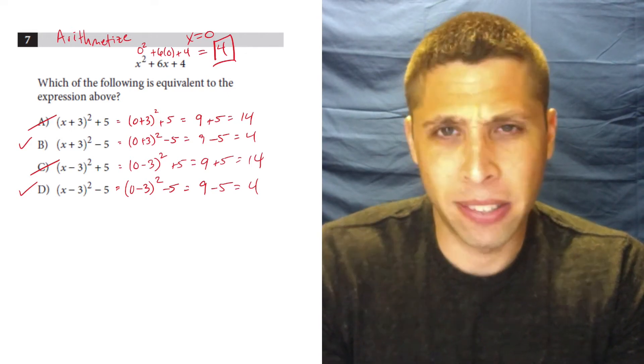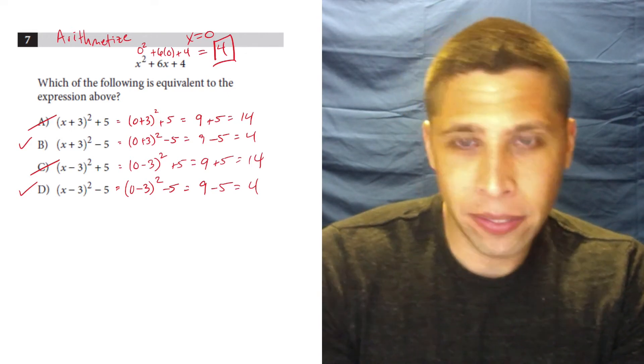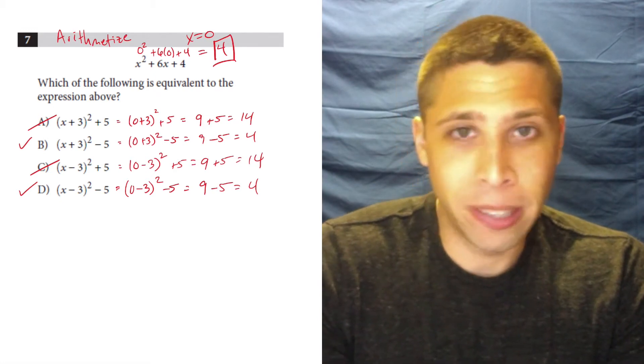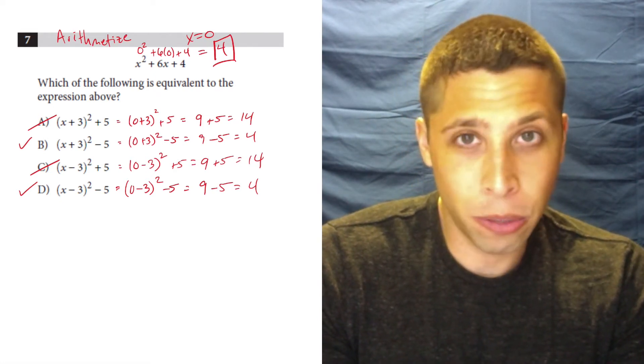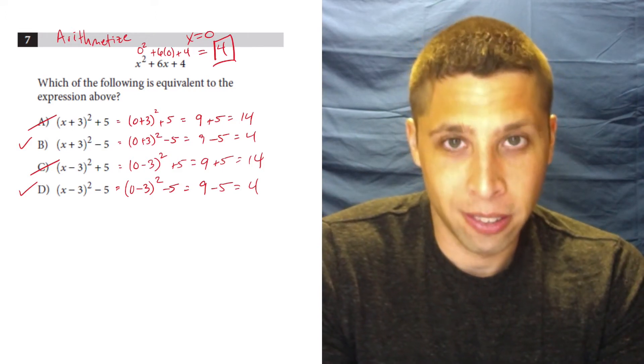This is a reason that a lot of people say never pick zero when you pick numbers. I think that's bad advice. Pick zero. It takes like two seconds. And even if it goes bad, so what? We eliminated two answer choices, and now we just pick the next laziest number to deal with the ones that are left. What else is lazy here?